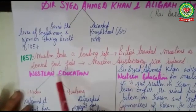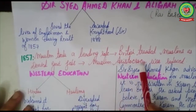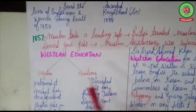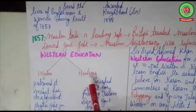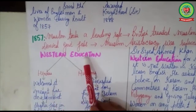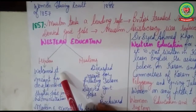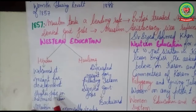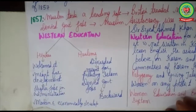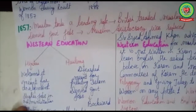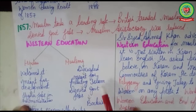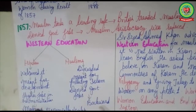In the 1857 revolt, Muslims took a leading role, so the British treated Muslims as their enemy. As a result, government jobs were denied to the Muslim community, and Muslim aristocracy — zamindars, nobles, and the rich class — declined in society. When western education was introduced, Hindus welcomed it and adopted it, gaining higher jobs and becoming modern and economically developed. Muslims, however, discarded western education, believing it would pollute their religion Islam, so they were denied government jobs and became socially and economically backward.